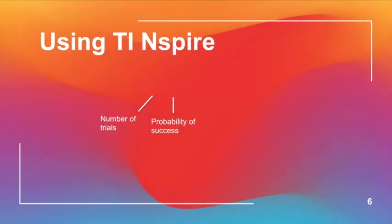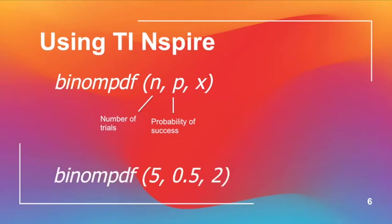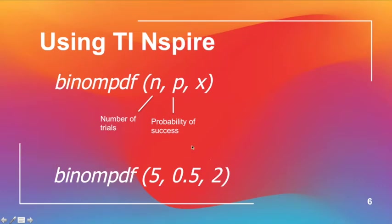Now let's use the TI-Nspire CX. We're going to find the function binomPDF, which is the probability distribution function. The inputs are: N — the number of trials; P — the probability of success; and X — the value of the random variable. So it will be binomPDF(5, 0.5, 2).